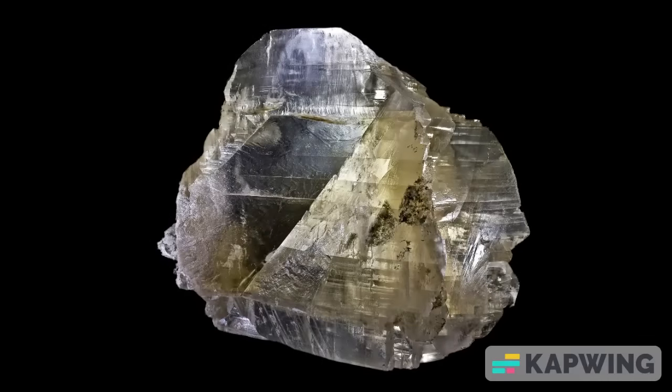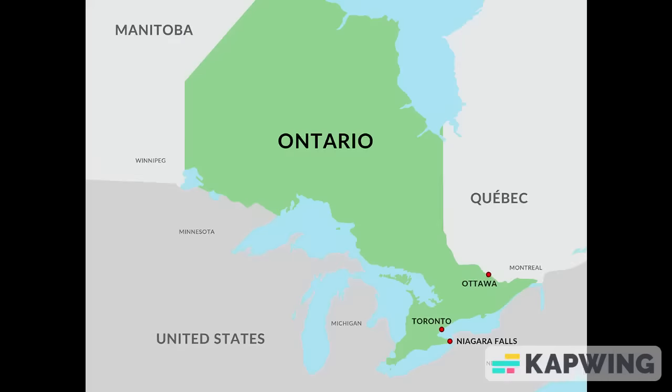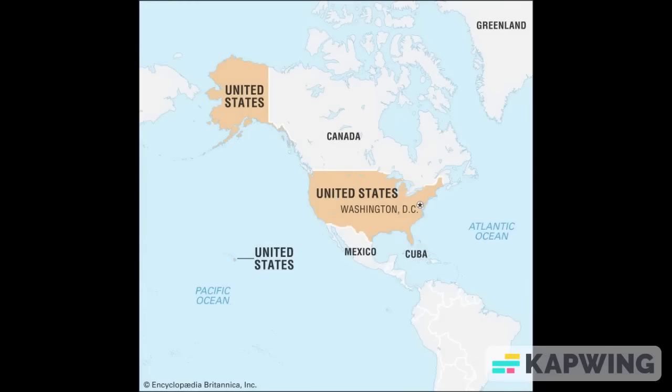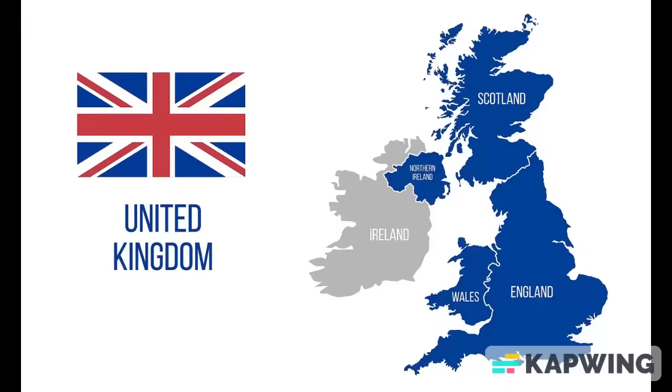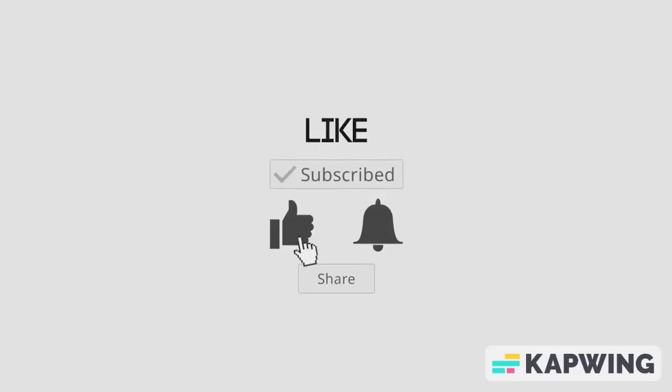The different varieties of gypsum occur in Nova Scotia, Ontario, and New Brunswick in Canada, as well as the United States, New Mexico, and the United Kingdom.